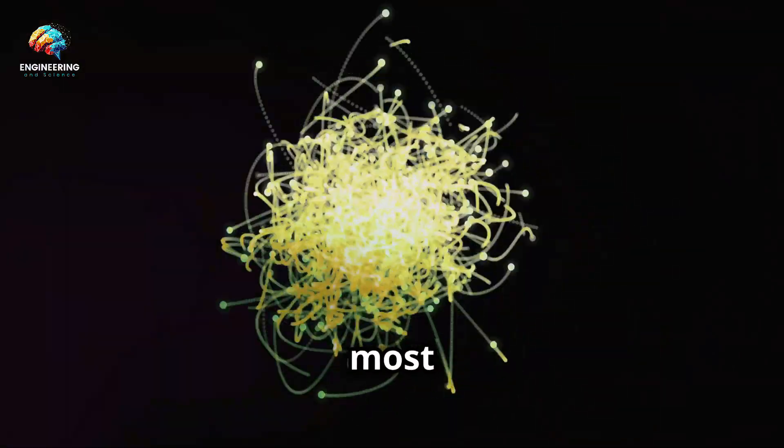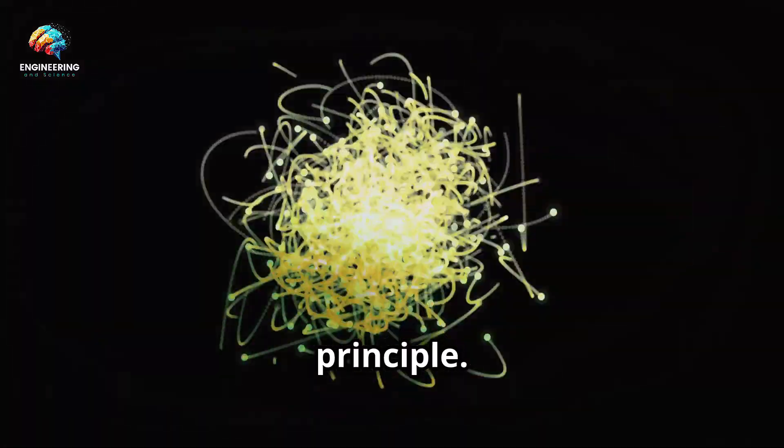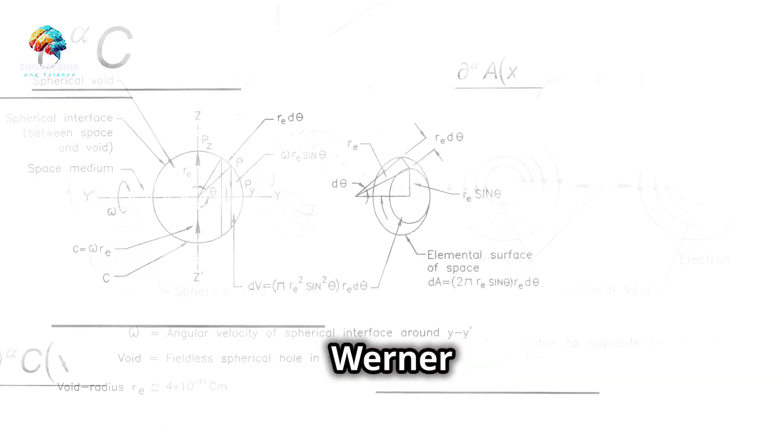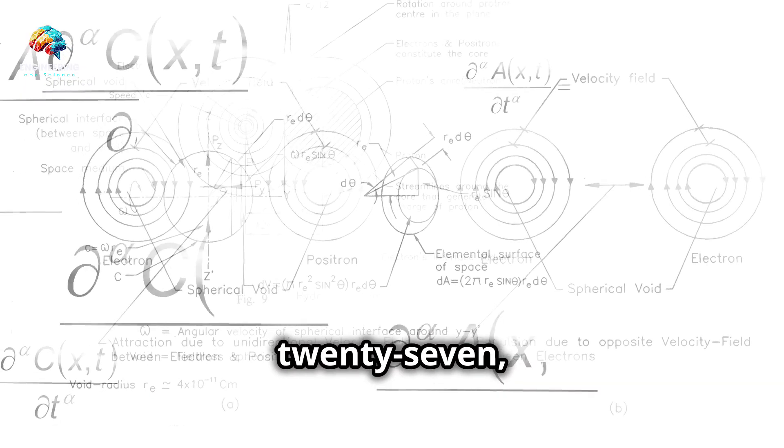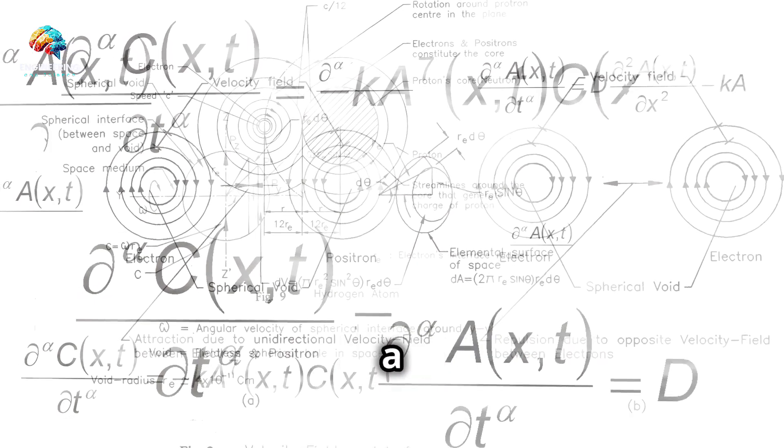One of the most profound and unsettling concepts in quantum mechanics is the uncertainty principle. Formulated by Werner Heisenberg in 1927, it states that there are fundamental limits to what we can know about a quantum particle.